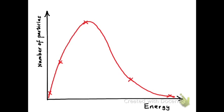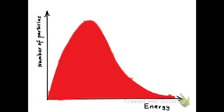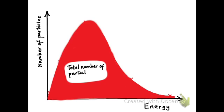Mathematically, the area under this graph, if we shade that area in, represents the total number of particles in the sample. Don't worry too much about the math behind it, but that area under the graph is the total number of particles in a sample. So for a given sample, if we change other parameters, the area under the graph must remain constant.